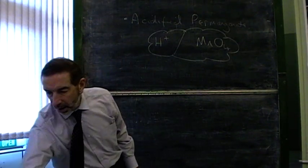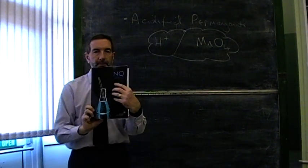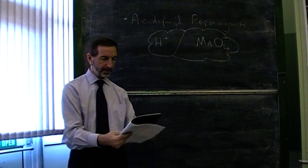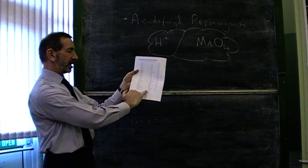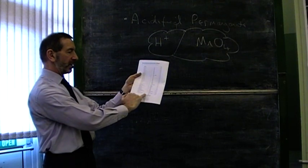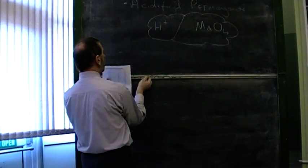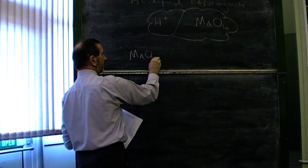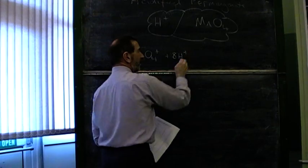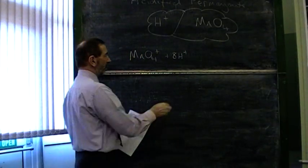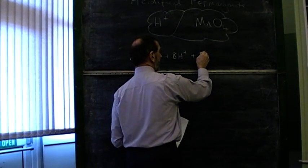You'll find in the data book, on page 11, the chemistry of acidified permanganate. It's down here, near the bottom of the table. It tells us down here, that when you have permanganate, and you have acid, then it's very hungry for electrons.